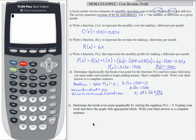To finish up this example, we're asked to determine the breakeven point graphically by solving the equation P(x) = 0, explaining our work and showing the graph with appropriate labels.